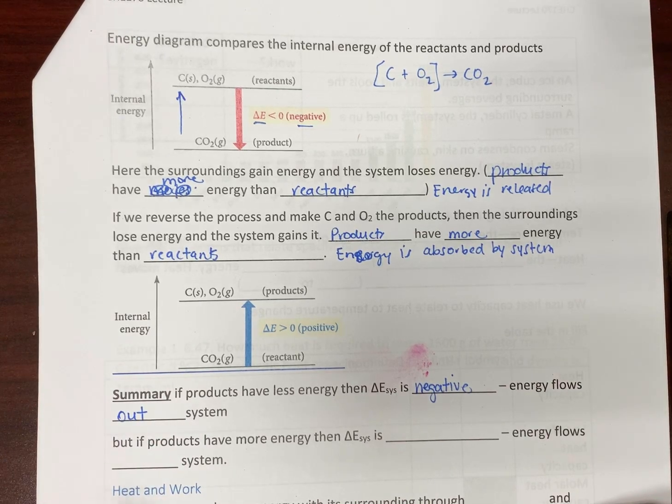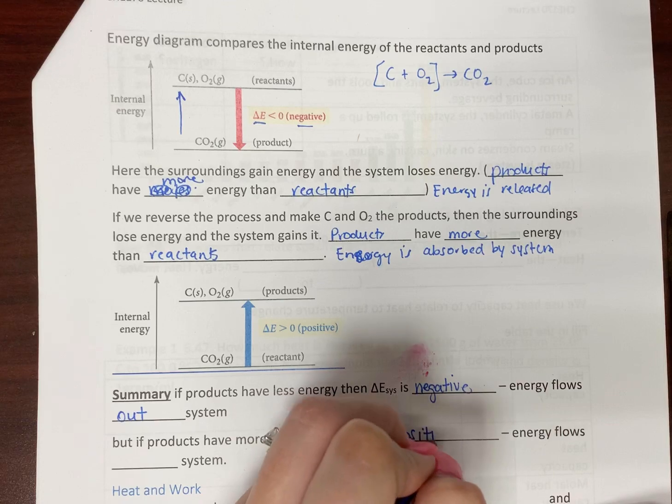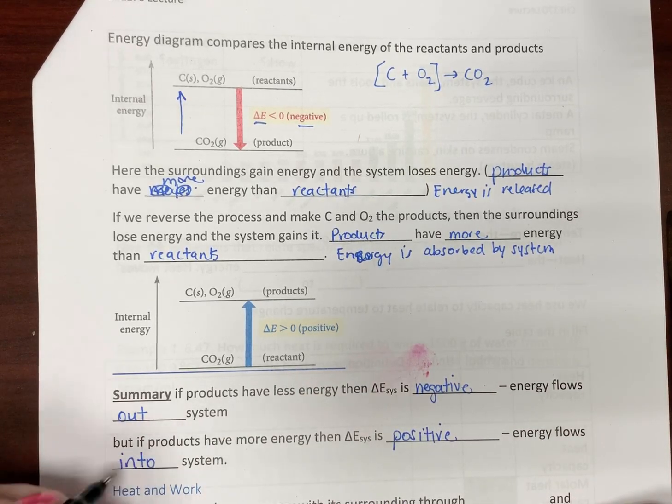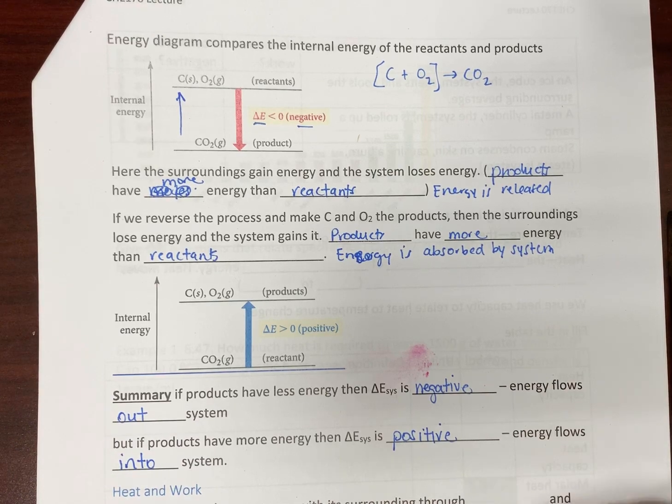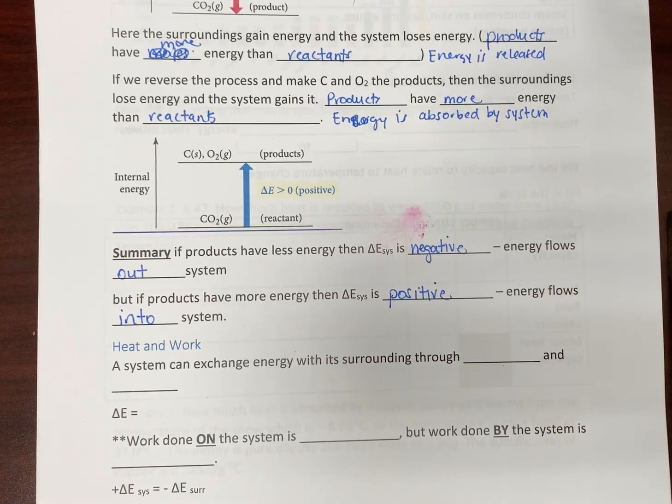If we're talking about heat, generally heat would be released. But, if the products have more energy, then we are gaining energy from the surroundings. So, energy goes into the system. Again, it sounds straightforward, and then you start thinking about it. So, let's get started.